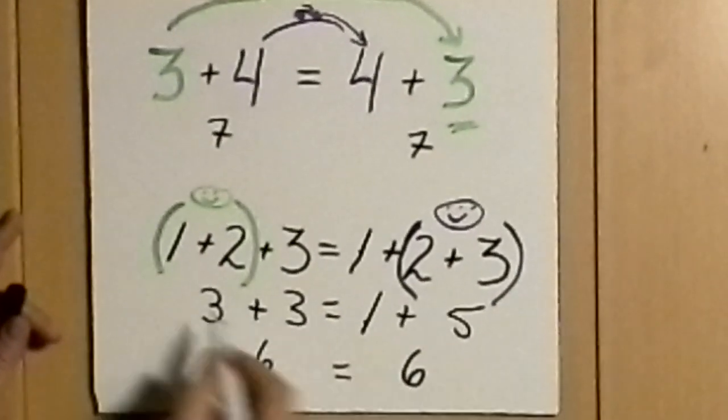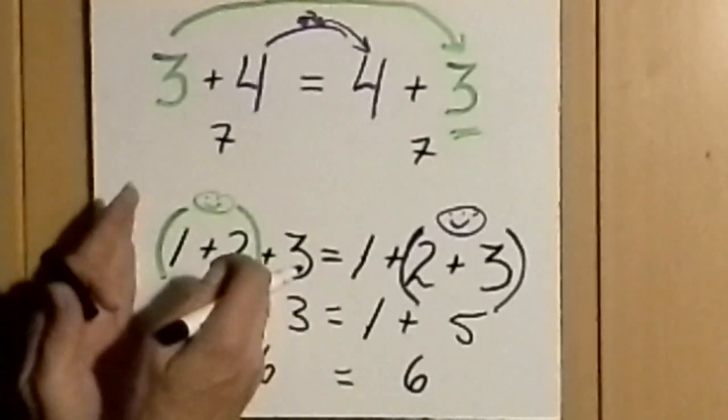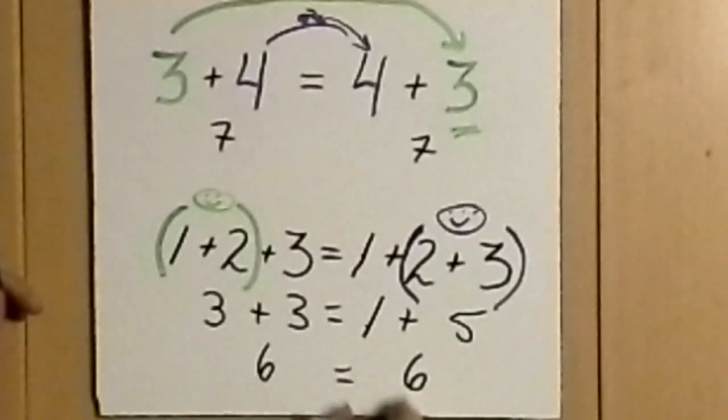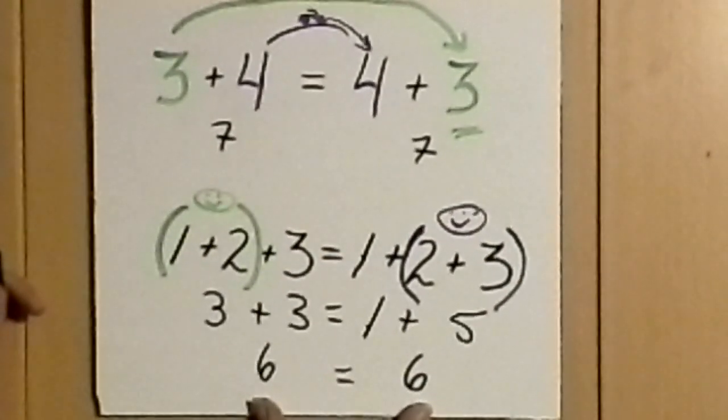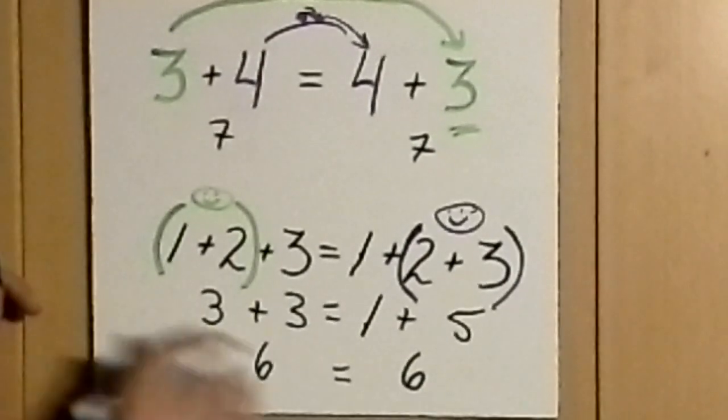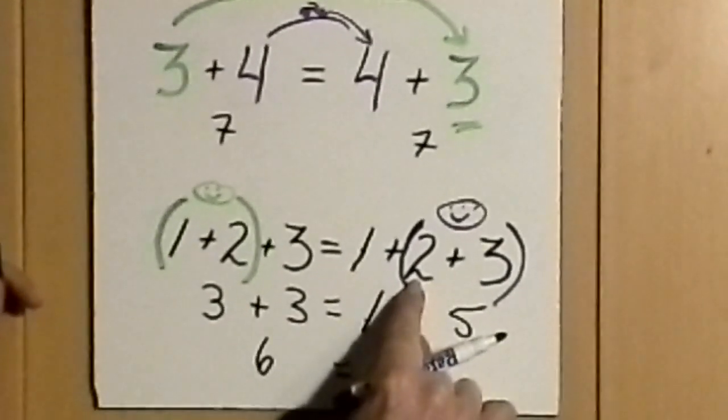So we have proven that no matter with which value the 2 associates, the value will still become a 6 either way. In this case, the associative property because of with whom the 2 associates.